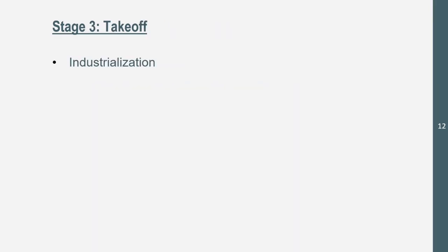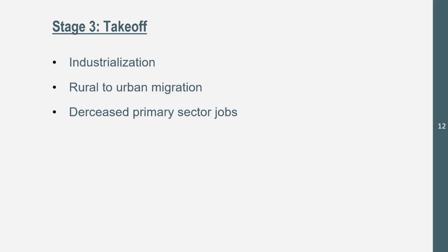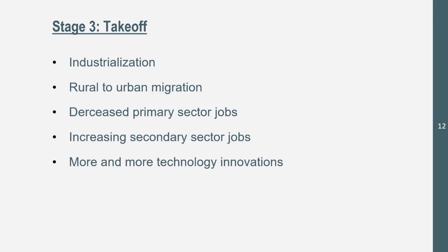Stage three is Takeoff. We see industrialization — the United States and Great Britain during the early 19th century Industrial Revolution are good historical examples. There is rural-to-urban migration as people move from rural areas to urban factories. Primary sector jobs decrease as secondary sector factory jobs increase. We also see increasing technological innovations — like the spinning jenny and the Watt steam engine during the US and British Industrial Revolution. A current example of a takeoff country is Thailand.